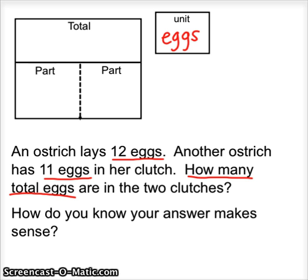If you look at our diagram here, this is called a part-part-total diagram. We have two parts and a total. First we need to figure out what we are looking for. We are looking for the total, so we can put a question mark under total. The first part would be 12, because the first clutch has 12 eggs. The second part is 11 eggs. We have two clutches, or two parts, 12 and 11, and we are looking for the total.